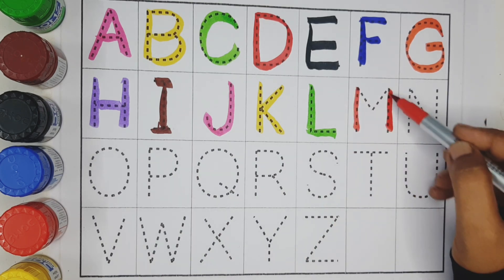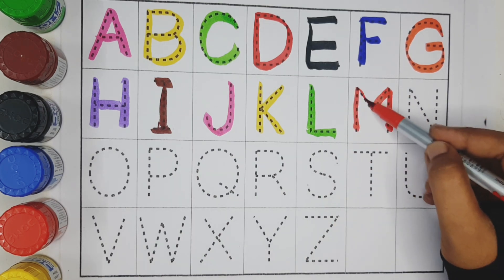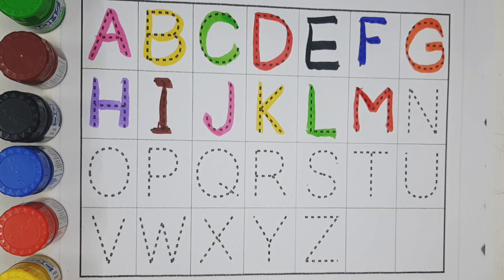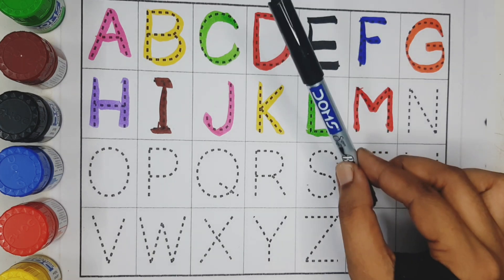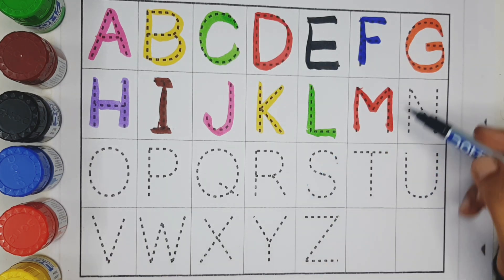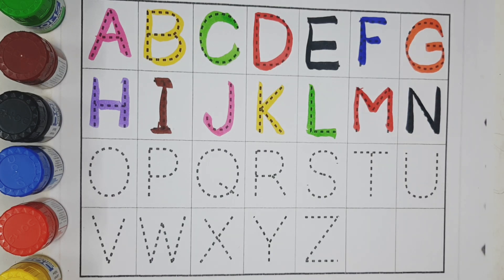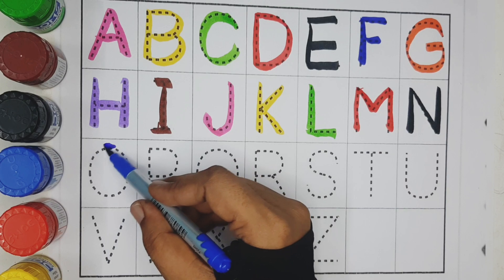M. M for Moon. Black colour. N. N for Nest. Blue colour.